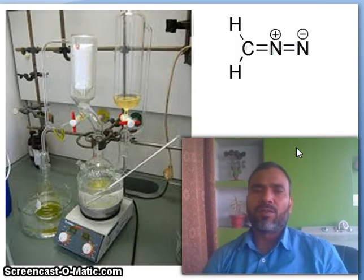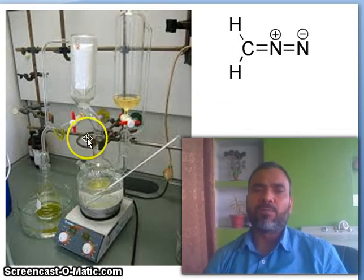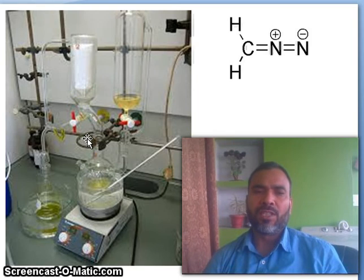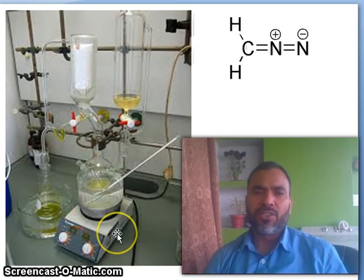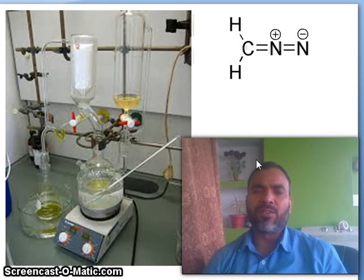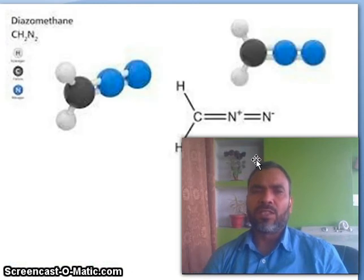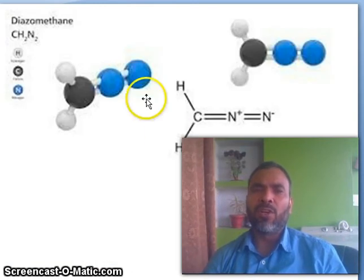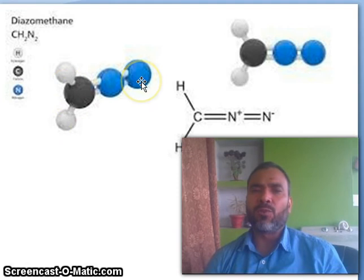How do people synthesize this type of molecule in the laboratory? You can see the lab setup here — the glassware, thermometer, and heating arrangement — all of this is needed for the synthesis of Diazomethane. This is the molecular model: the black one is carbon, the two white ones are hydrogen, and the blue ones are the two nitrogens.